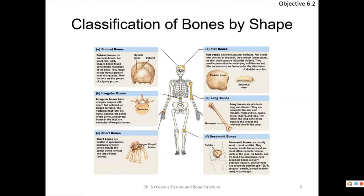Here we have a sutural or Wormian bone that formed as an island of bone because of the way the skull developed. It's not the occipital, not the parietal — it's really not a named bone. They can range in size and have no specific location because they form based on the way the skull forms in patches. We saw irregular bones, short bones like carpals and tarsals, long bones like the humerus, flat bones, and sesamoid bones.